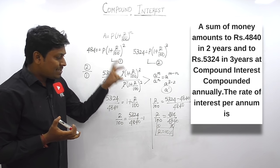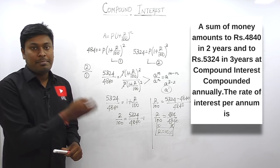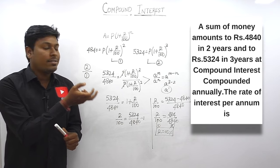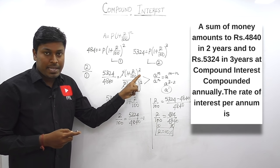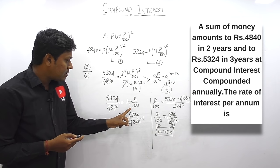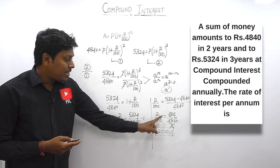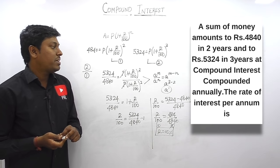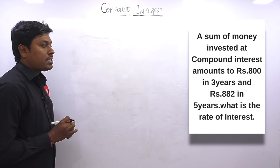We apply the same logic for all similar questions — whether finding the rate of interest or the principal. The two data points frame two equations; divide equation two by equation one, apply aᵐ ÷ aⁿ = aᵐ⁻ⁿ, bring the +1 to the left as −1, take LCM, and find the rate of interest is 10%.